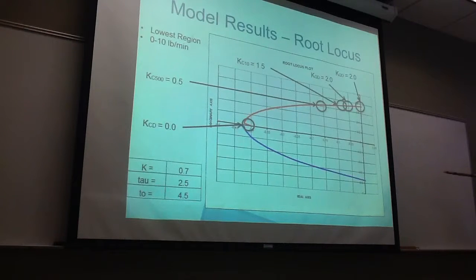And then our 1/500 decay ratio, which is Kc 500 at 45 degrees, was found to be 0.5. And this is in our lowest region, which is 0 to 10 pounds per minute of our system. And our 1/10 decay, we found to be 1.5, and that's Kc 10. Then our quarter decay, we found to be 2.0.